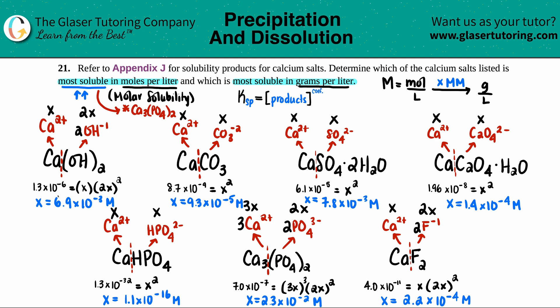The blue values are molar solubility; the red values below will be grams per liter. For Ca(OH)₂: molar mass is 40.08 + 2×16 + 2×1.008, multiplied by 6.9 × 10⁻³, giving 0.51 g/L. For calcium carbonate: 40.08 + 12.01 + 3×16, multiplied by 9.3 × 10⁻⁵, gives 9.3 × 10⁻³ g/L — already out, since calcium hydroxide is much larger.